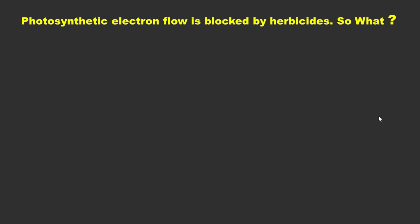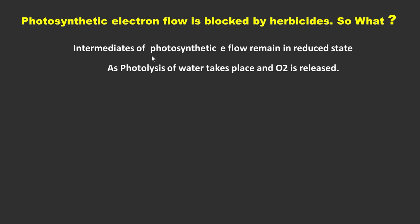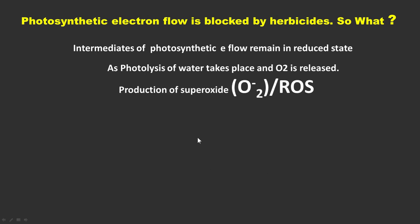When these herbicides block the photosynthetic flow of electrons, the intermediates of the photosynthetic electron transport chain remain in a reduced state, meaning they are carrying a negative charge. We know that photolysis of water takes place at Photosystem 2, by which oxygen is released. If this oxygen accepts electrons from the reduced intermediates, which are carrying a negative charge, the oxygen becomes superoxide because it carries one extra electron.